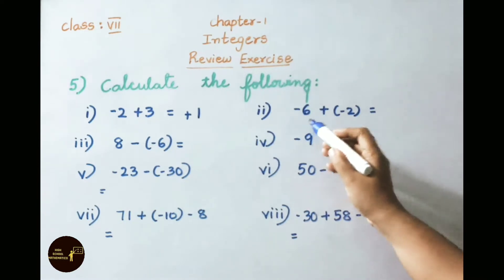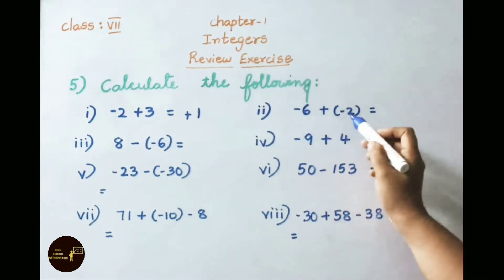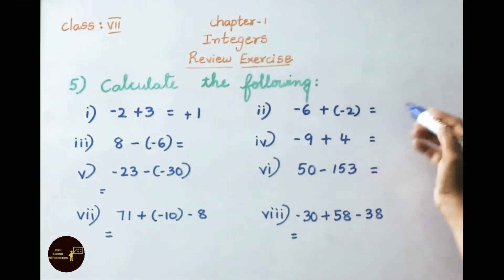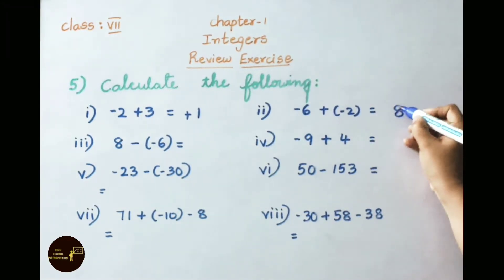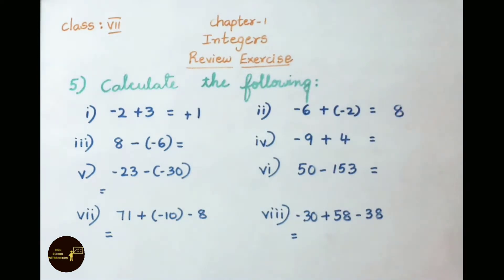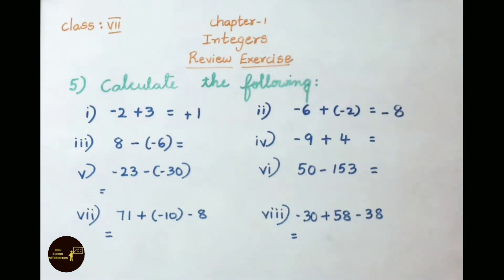See the second one: minus 6 plus of minus 2. Both are the same sign, so we have to do addition. 6 plus 2 equals 8. Since both are negative integers, add a minus sign. So the answer is minus 8.